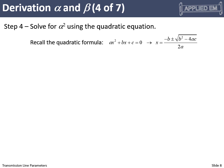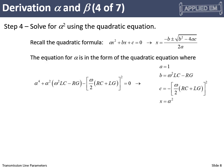We determine alpha squared using the quadratic equation. Recalling that for ax² + bx + c we solve for x, here our a equals 1, our b is ω²LC − RG, and our c is the last term. Our variable is alpha squared rather than x. We use those expressions for a, b, c to plug into the quadratic formula and solve for alpha squared. The only remaining issue is the sign ambiguity on the square root.